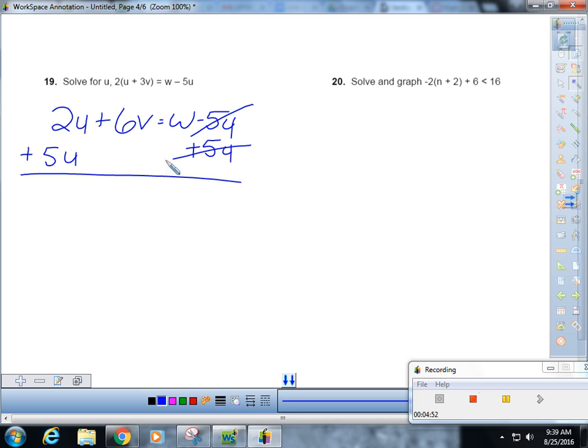The fewer negatives, the better I do. 6u, or sorry, 7u plus 6v equals w.